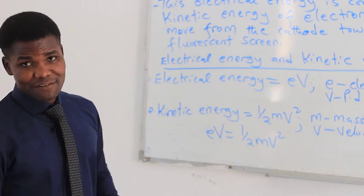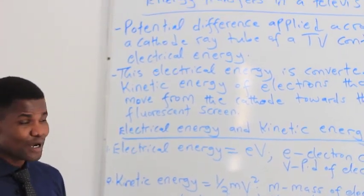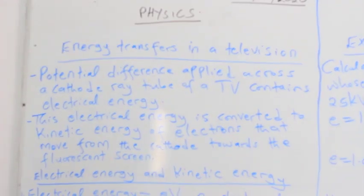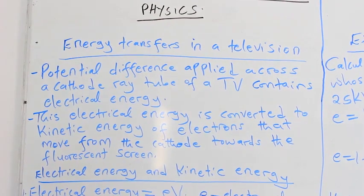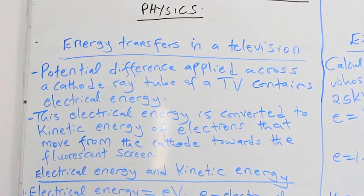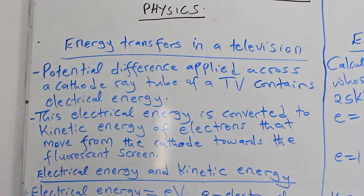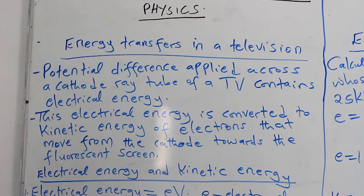We are talking about thermionic emission, which you studied in Form 3. In thermionic emission, you heat the cathode part of the cathode ray tube, and the electrons are excited and released. They are sieved through a grid, and then the anode accelerates those electrons towards the fluorescent screen, which gives you information in the form of pictures and everything you want.